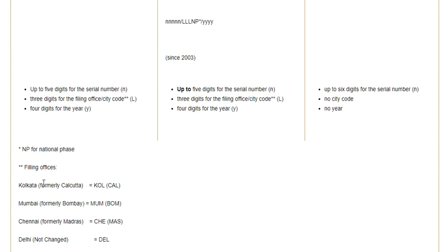The filing offices and their codes are: Kolkata (formerly Calcutta) — code KOL (formerly CAL); Mumbai (formerly Bombay) — code MUM (formerly BOM); Chennai (formerly Madras) — code CHE (formerly MAS); and Delhi — no change, code is DEL.